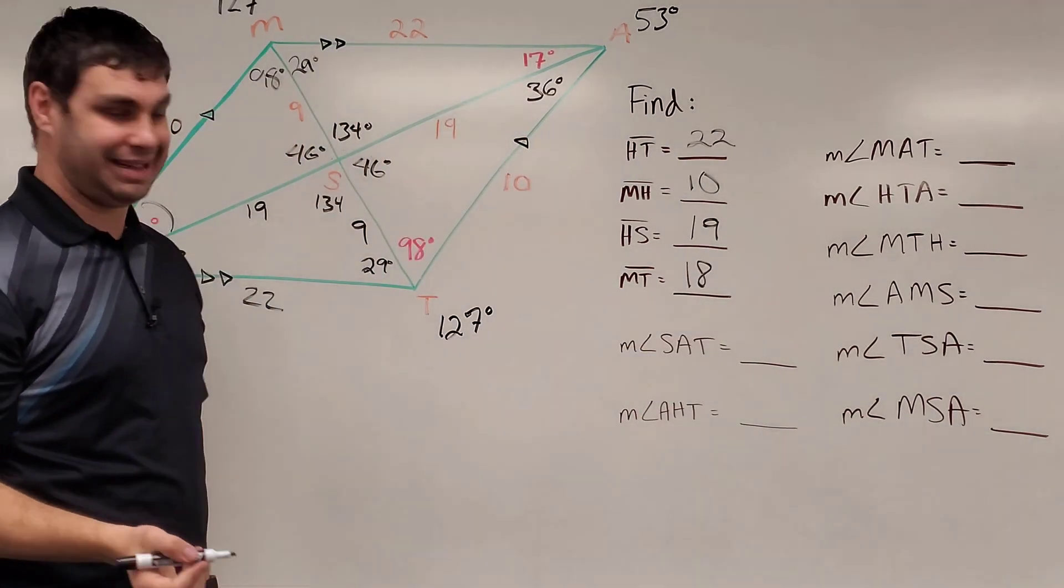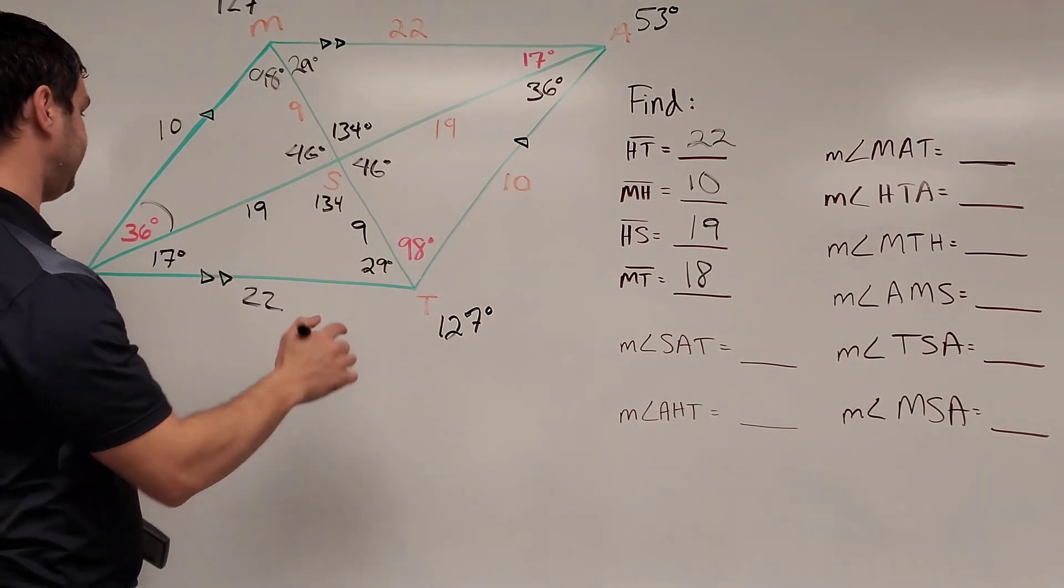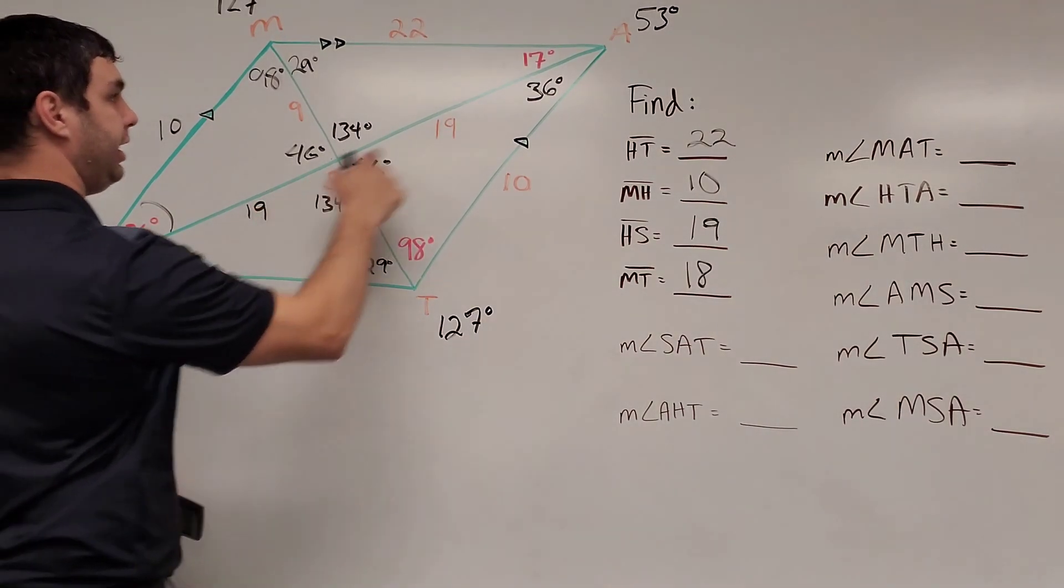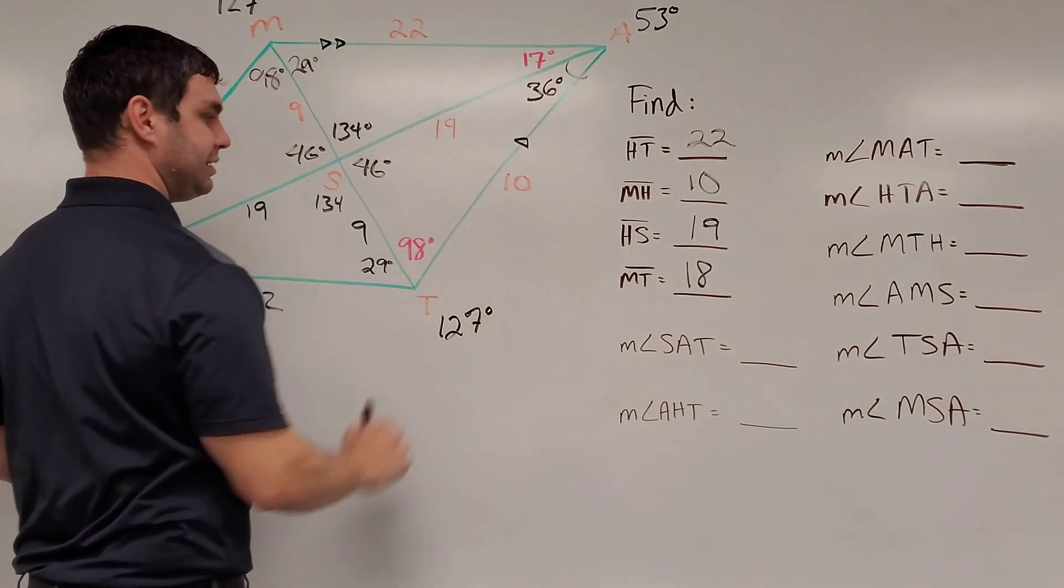Now onto some missing angles. SAT, the hardest part is kind of finding which vertices we're using, SAT. So S, the A is up here, and the T is down there. So SAT is talking about this angle, the 36 degrees.